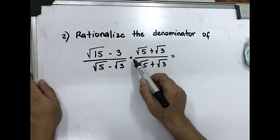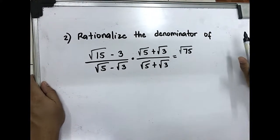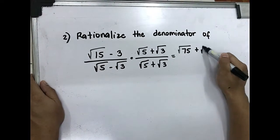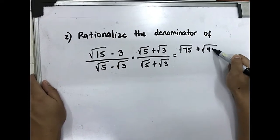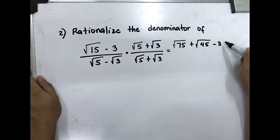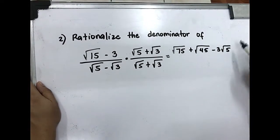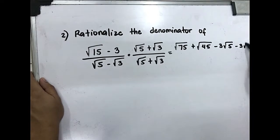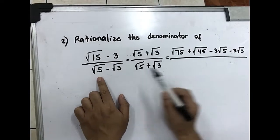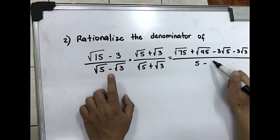Distribute: square root of 15 times square root of 5 is square root of 75. Square root of 15 times square root of 3 is positive square root of 45. Negative 3 times square root of 5 is negative 3 square root of 5. Negative 3 times square root of 3 is negative 3 square root of 3. All over: by difference of two squares, square root of 5 squared minus square root of 3 squared gives 5 minus 3.